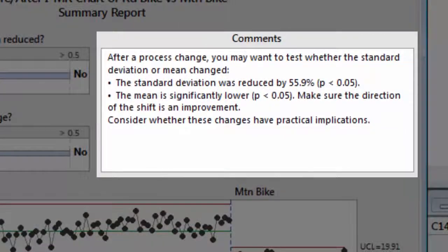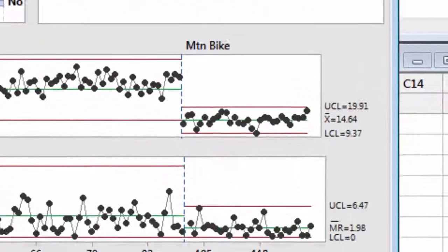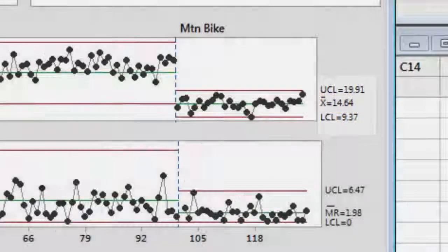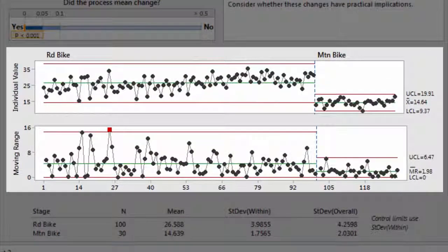The standard deviation was reduced by 55.9%. Joel's mean commute time dropped from 27 minutes to less than 15 minutes. Joel's commute process now fits within much tighter control limits and has far less variation.